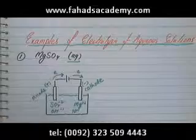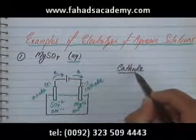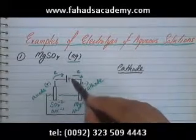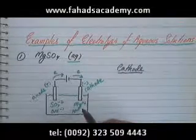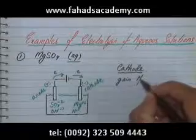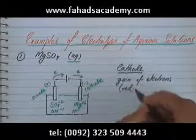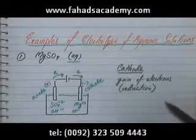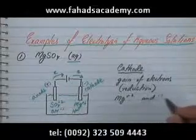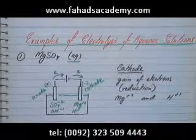Now we're going to see what's going to happen at the cathode. The battery is giving electrons to the cathode, and any ion that reaches the cathode is going to try to gain electrons — cathode always involves reduction. We have two candidates competing for electrons: Mg²⁺ and H⁺, and they are competing for the electrons coming from the negative terminal of the battery.